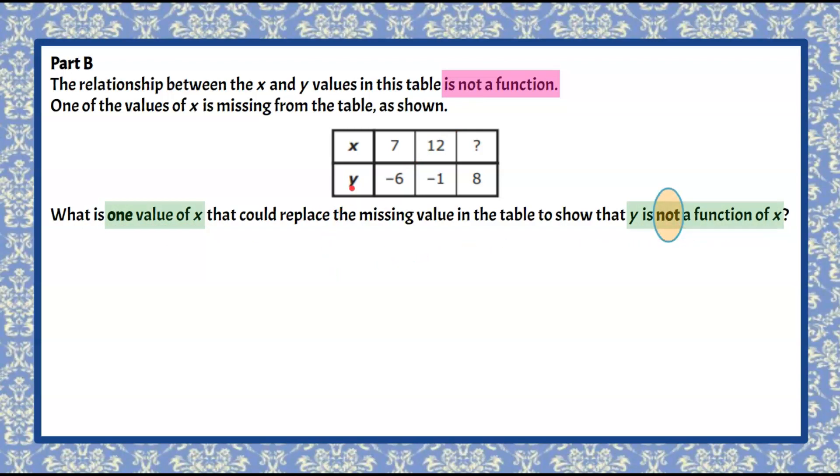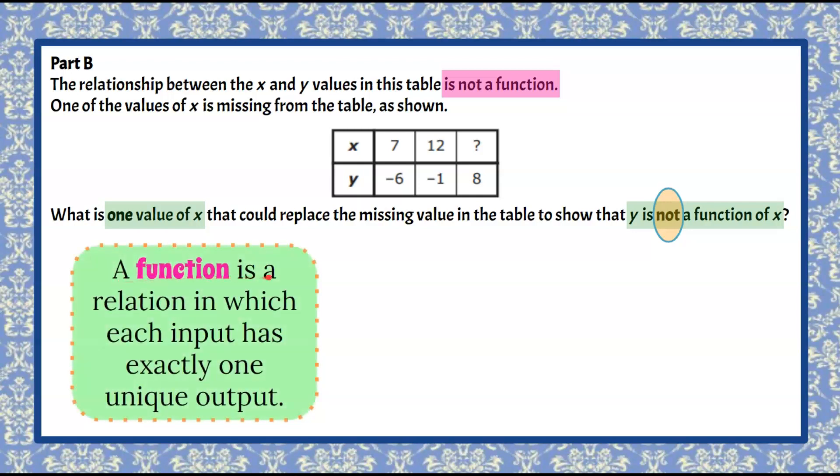When we look at a table of values, we can't do the vertical line test with our pencil because it's not a graph, it's a table. So a function is a relation in which each input has exactly one unique output. So you would look at all your inputs, your x values, and make sure that they only occur once and they have their own unique output.